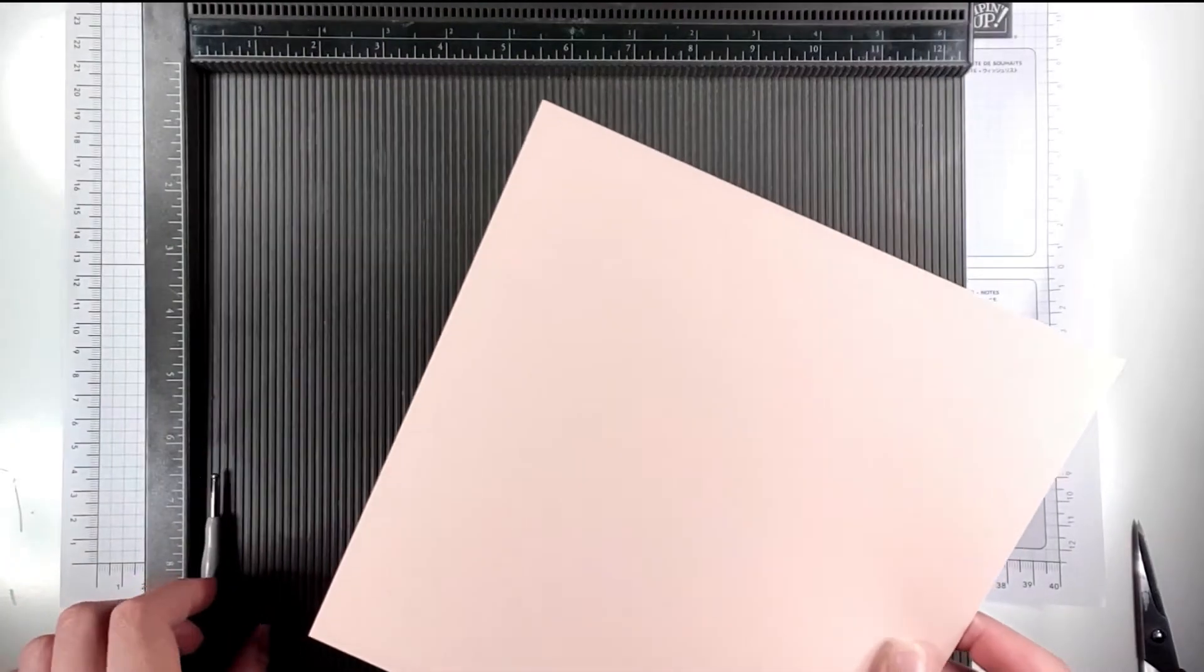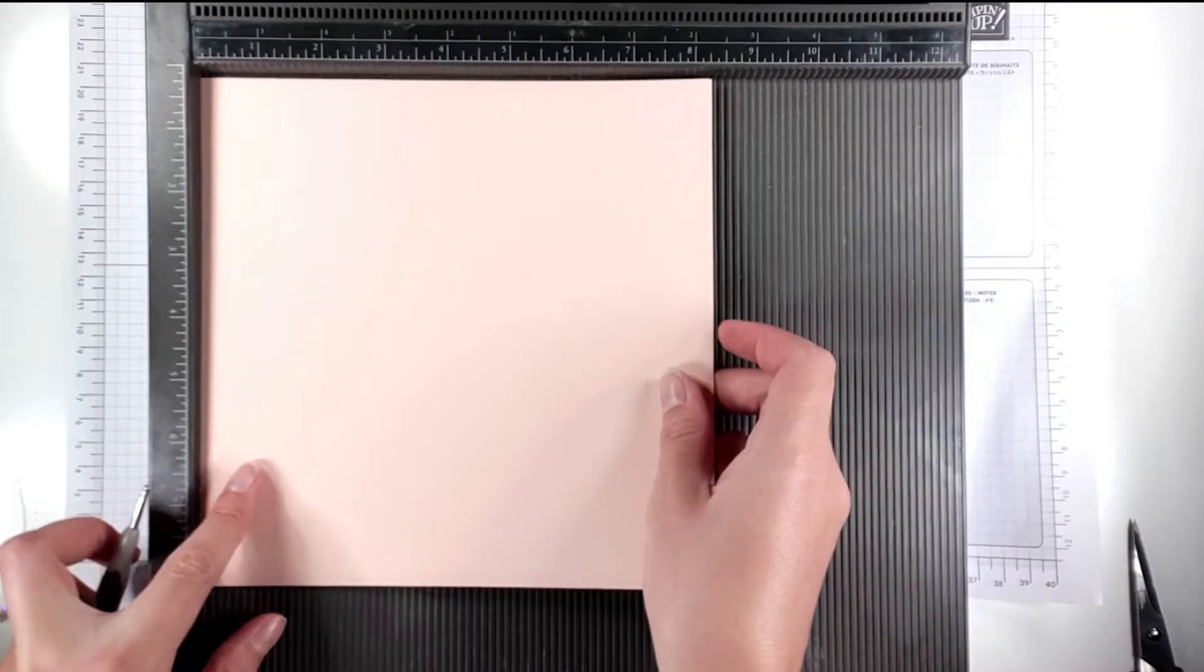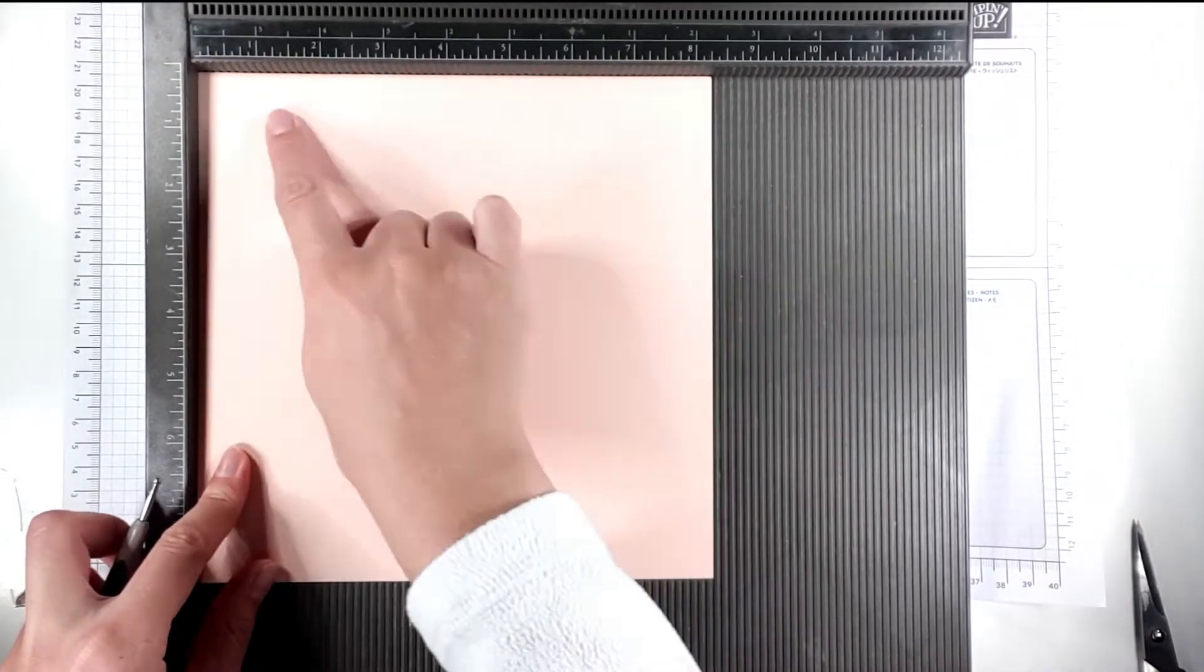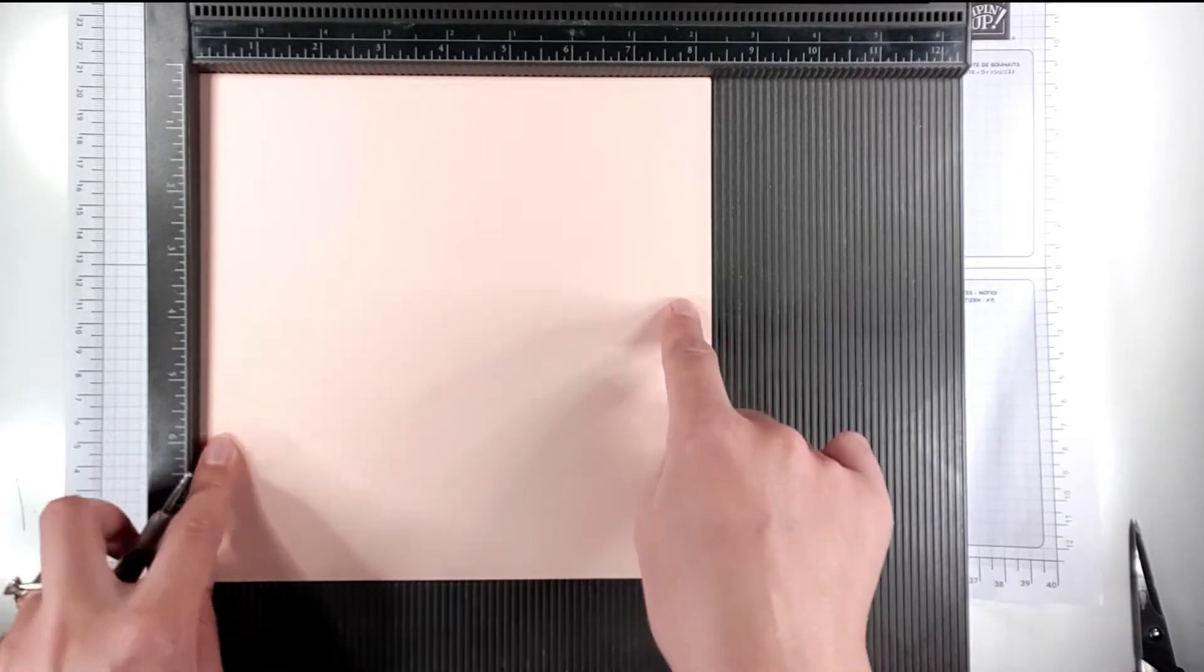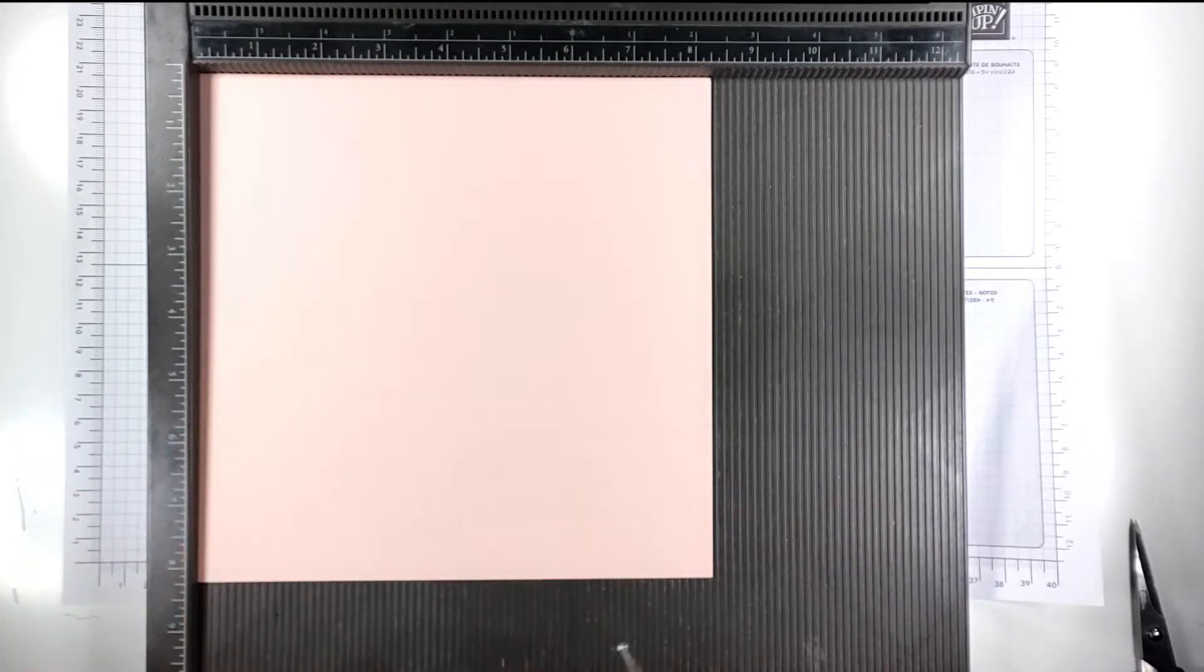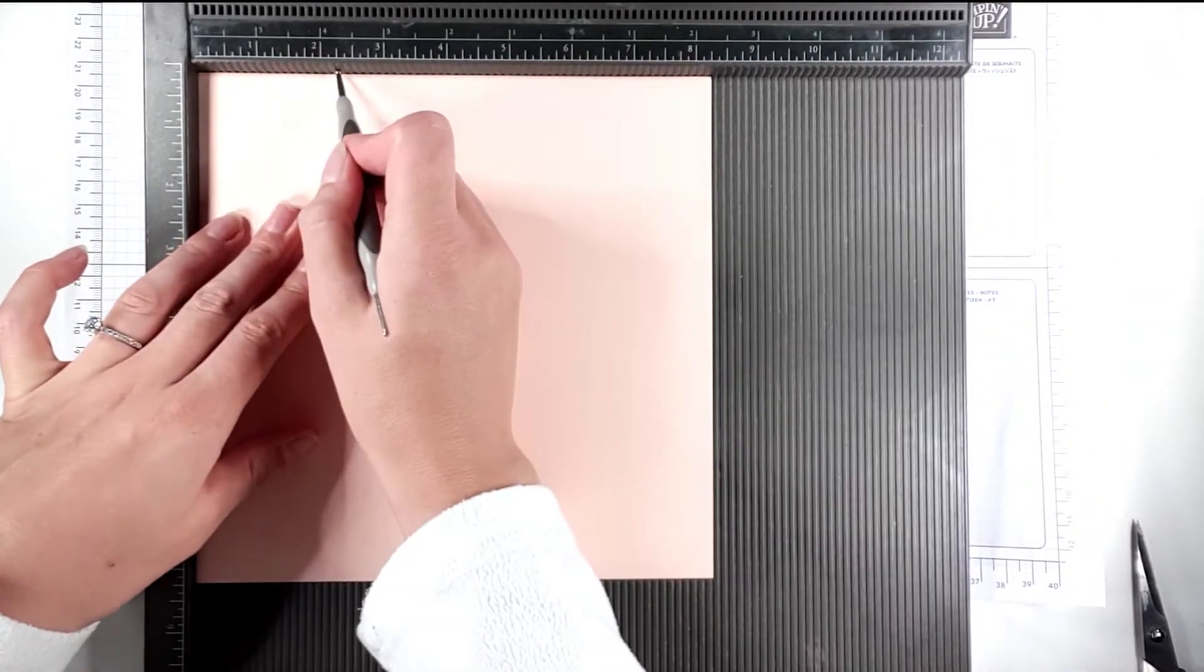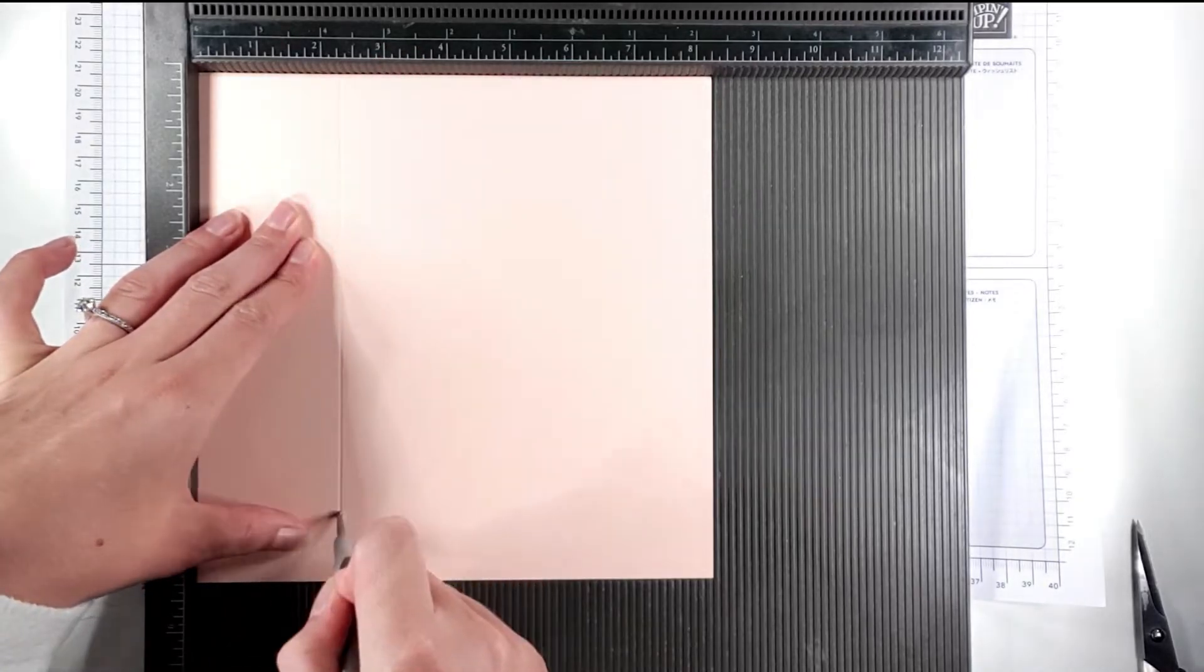We're going to start by creating the base of the box. This sheet of petal pink cardstock is eight and a quarter inches square and we're going to score it at two and a quarter inches on each side.